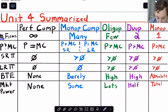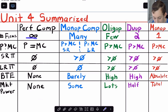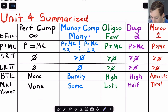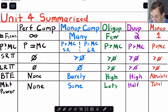How many firms do we have in each type of market? Well in perfect competition we say we have infinitely many. In a monopolistic competition market — MC — we have many firms. Oligopoly, we're going to have few firms. Duopoly, two firms. Monopoly, one firm.